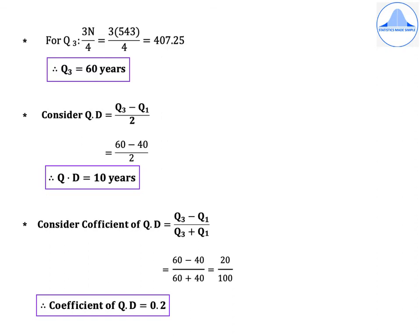The coefficient of quartile deviation = (Q3 − Q1) / (Q3 + Q1) = (60 − 40) / (60 + 40) = 20 / 100. Therefore, coefficient of quartile deviation is 0.2.